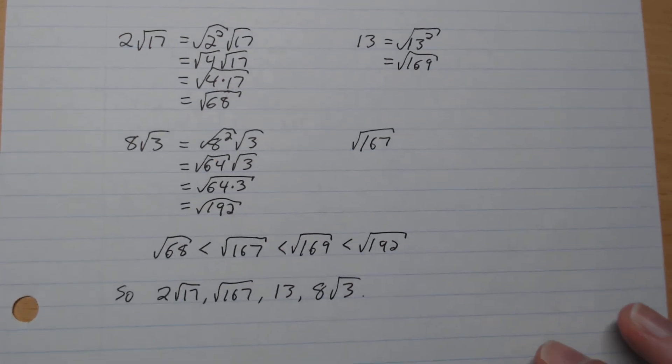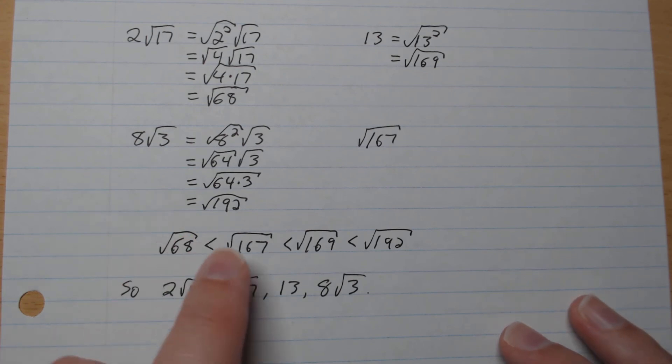So we're going from least to greatest, so root 68, root 167, root 169, and root 192. And so the order is 2 root 17, root 167, 13, and then 8 root 3.